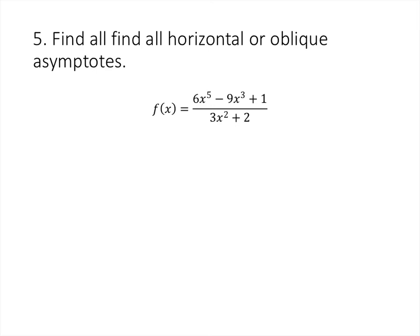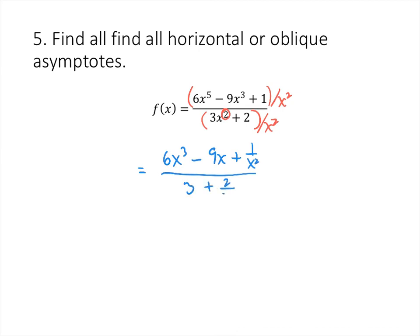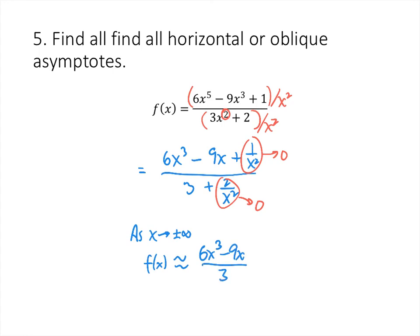One last example. The highest power of x on the bottom is x squared, so we take top and bottom and divide by x squared. When we do that and simplify, on the top we get 6x cubed minus 9x plus 1 over x squared, divided by 3 plus 2 over x squared. Anything with an x in the bottom goes to 0, so as x goes to plus or minus infinity, the function is approximately equal to 6x cubed minus 9x divided by 3. That's not a line, so we have no horizontal or oblique asymptotes.